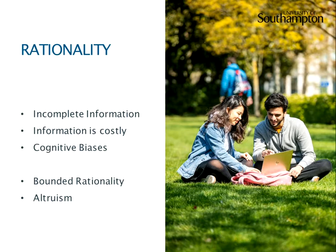In reality, we know that people have incomplete information and it's costly for them to access it or to use it in any way. Plus, people have noticeable cognitive biases. For instance, you're more likely to pay attention to what's said first and last in a lecture — that doesn't mean that you're behaving completely rationally. We think of people as having bounded rationality because they don't have complete information and they're not always processing that information without bias.